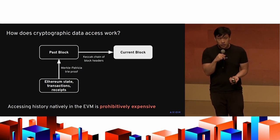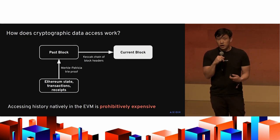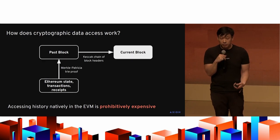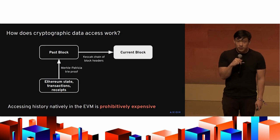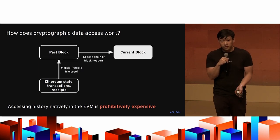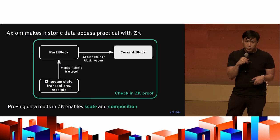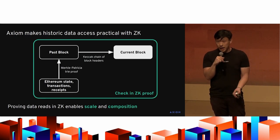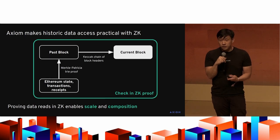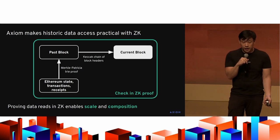On Ethereum, the current block is linked to all past blocks by a Keccak chain of block headers. Every past block commits to all the information in that block — namely the state of Ethereum at that block, as well as all transactions and receipts. The problem is that if you try to decommit all the way back to a million blocks ago, that's going to be prohibitively expensive — you can never do that in the EVM. What we realized at Axiom is that we can push all these verifications into ZK: checking a Merkle-Patricia trie proof as well as a chain of block header hashes, and make that feasible to verify on-chain. This provides scale, historic data access, and composability.